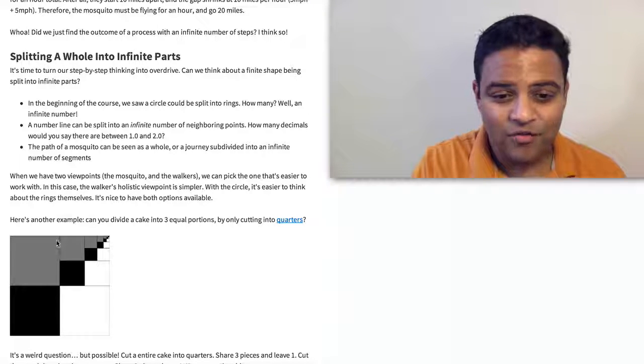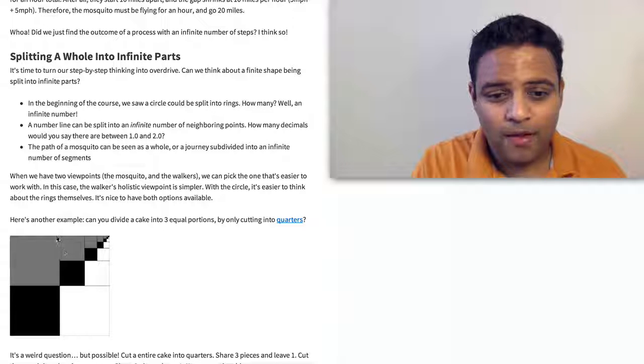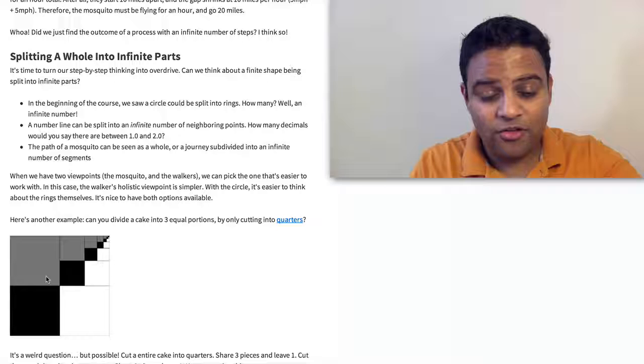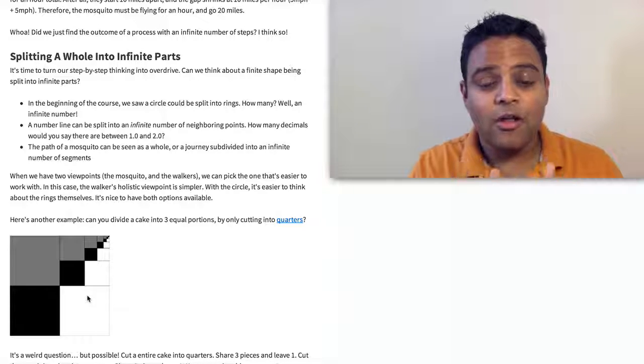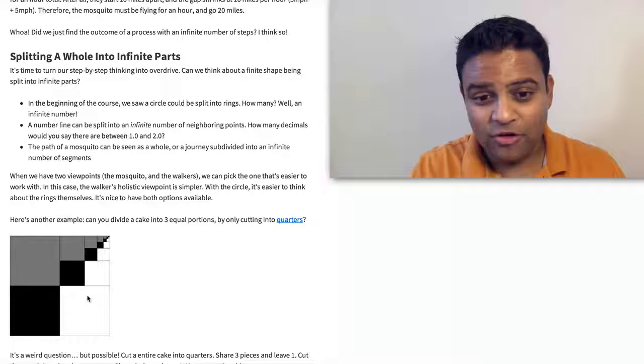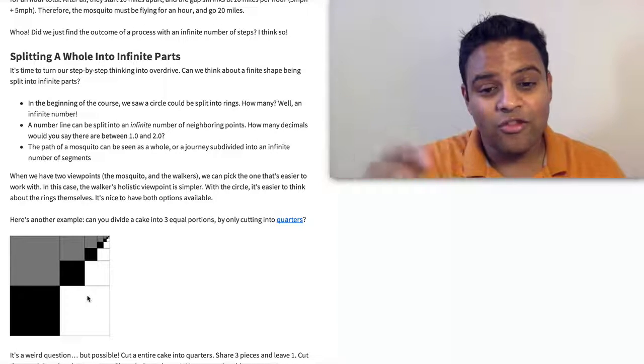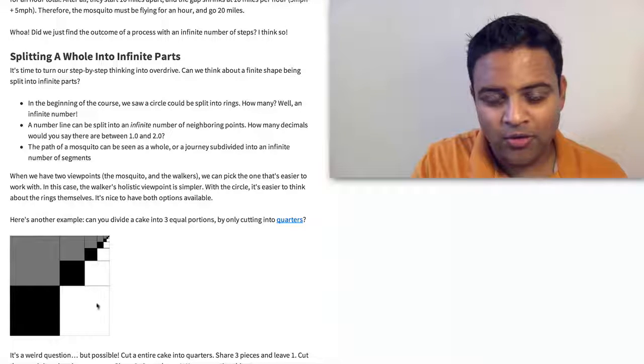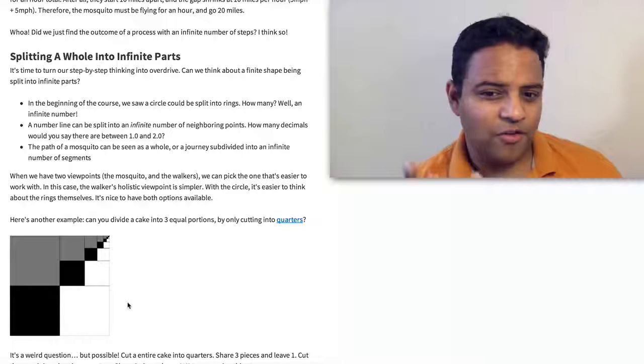Well, one insight is to do the following. You take the cake and cut it into four pieces, give one piece to each person, and the remainder, cut that into four pieces, give one piece to each person, cut the remainder into four pieces again, and so on. And as you can see, each person—the gray, the black, and the white—is getting the same share.